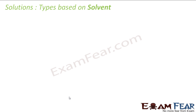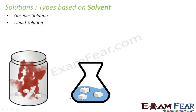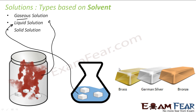We can classify solutions based on the type of solvent. We can have a gaseous solution where the solvent is gas, a liquid solution where the solvent is liquid, and a solid solution where the solvent is solid — for example, alloys like brass, German silver, and bronze.